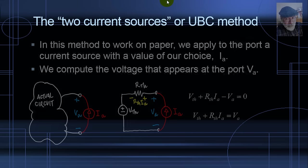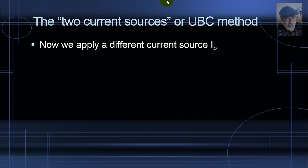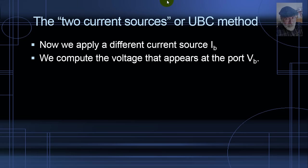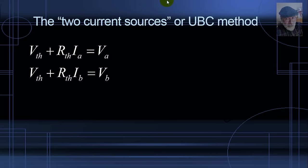We repeat the same exercise but with a different value of the current source. Apply a current source I_B and compute the voltage that appears at the port V_B, and we repeat the same analysis to the circuit on the right and write the second equation. We have then two equations and two unknowns V_TH and R_TH. From the first test and from the second test, two equations and two unknowns.